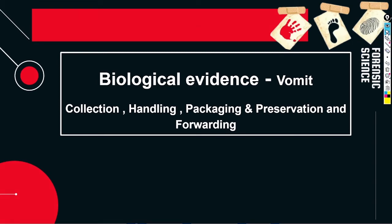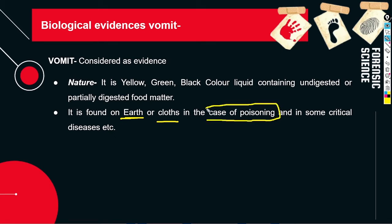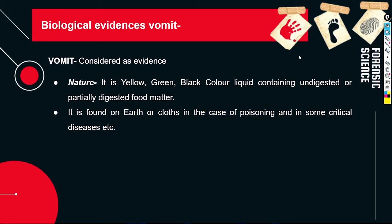So let's say we get vomit from a crime scene — how do we identify it? First of all, identification is easy. If you see vomit you can understand it: it can be yellow, green, or black in color, and you can also find undigested or partially digested food material. You can find it on the ground or on clothes. It is commonly found in poisoning cases and in critical disease cases, though vomit samples are collected in very few cases.